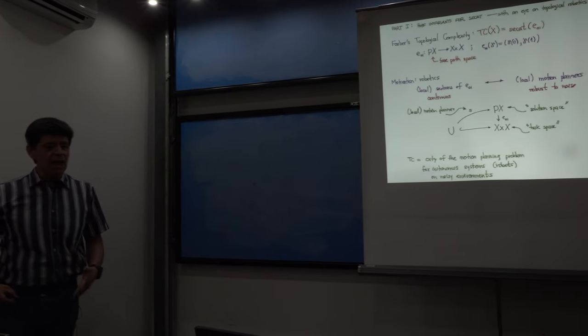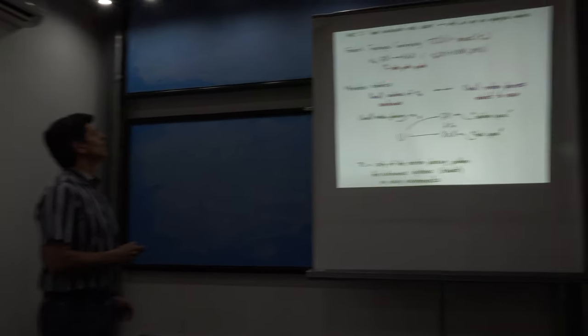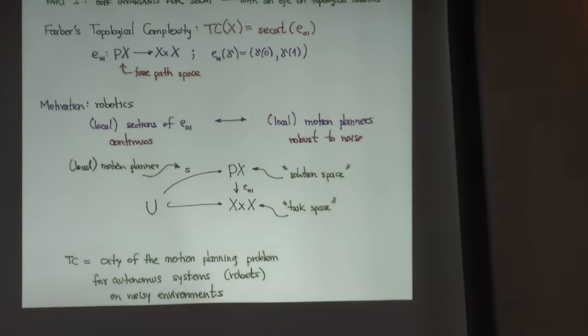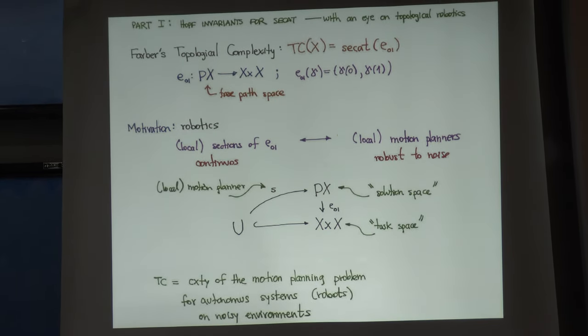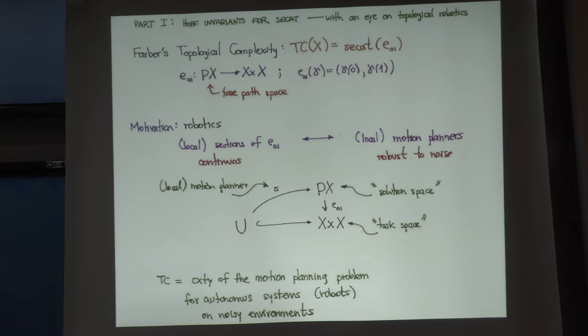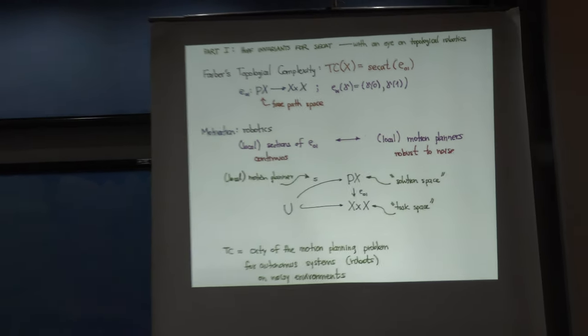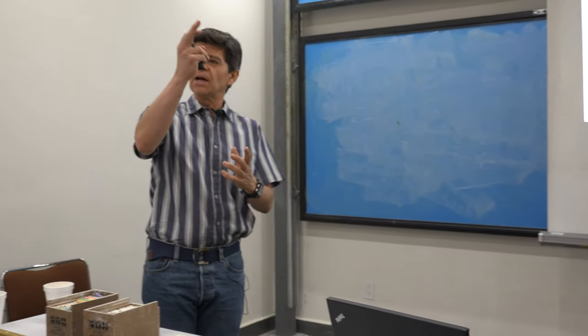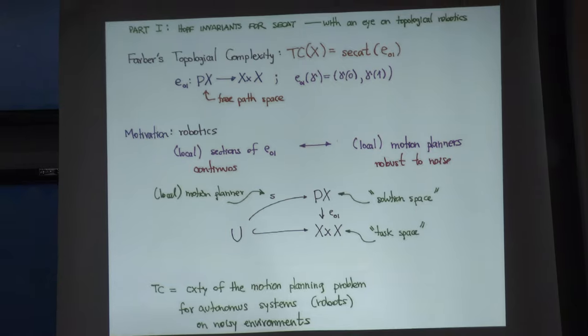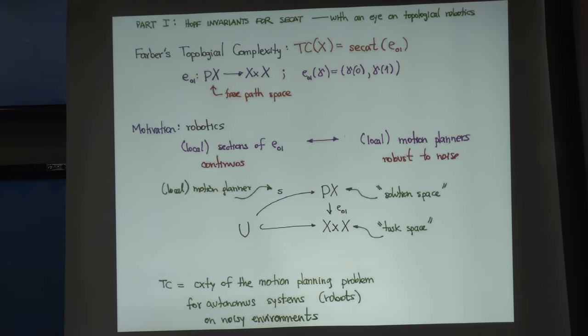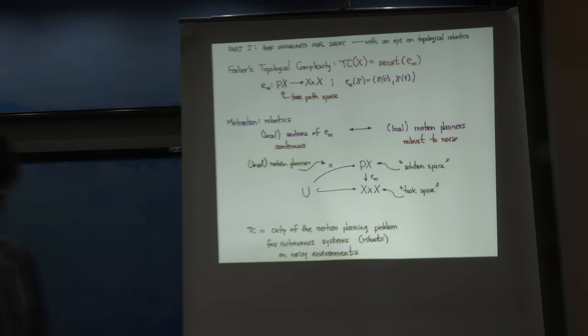Unfortunately, having a global continuous section for this fibration is equivalent to the space being contractible. In practice, robots do not have contractible configuration spaces. So instead, we define the topological complexity of the configuration space to be the sectional category of this fibration — the minimum number of open sets needed to partition the task space so that on each open set the robot admits a continuous, noise-robust motion planner. That is the topological complexity of the space.